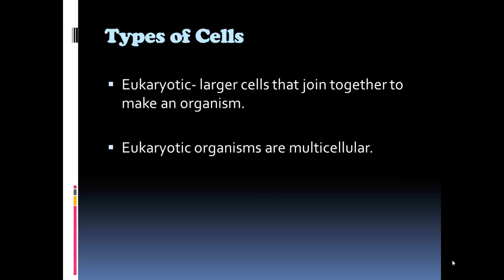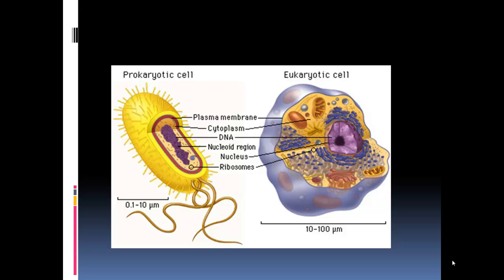On the other hand, a eukaryotic cell is a larger cell. All of these little cells join together and make total organisms, like you, me, your dog, and a plant. Eukaryotic organisms are multicellular. If you look at this picture, the size is different — a prokaryotic cell is that size, and a eukaryotic cell is almost 10 times its size.